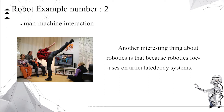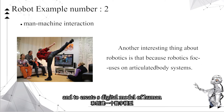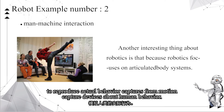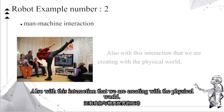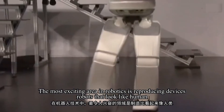Another interesting aspect of robotics is that because robotics focuses on articulated body systems, we are able to use all of these models and technologies to model humans and to create a digital model of a human that can be simulated and controlled to reproduce actual behavior captured from a motion capture device.